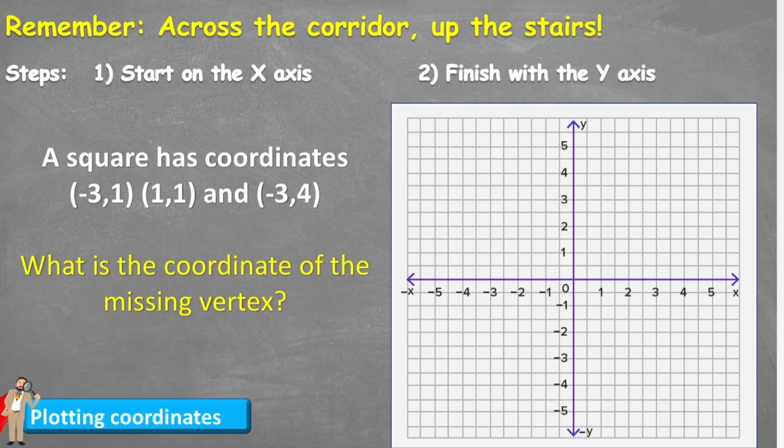Something else that we can do by plotting on a graph is to find a missing coordinate of a shape. This is a very common exam style question that says a square has coordinates (-3,1), (1,1), and (-3,4).